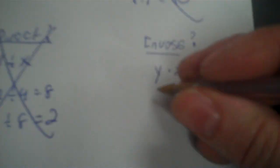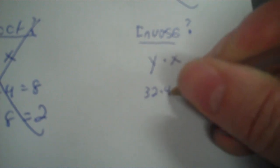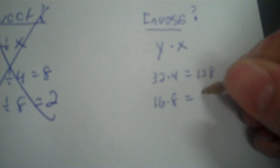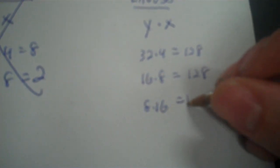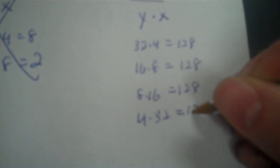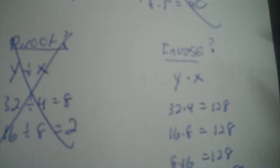Y times x, 32 times 4. 32 times 4 is 128. 16 times 8 is 128. 8 times 16, well it's 128 because multiplication is commutative. It's the same thing. And then 4 times 32 is 128. So yeah, it's inverse.